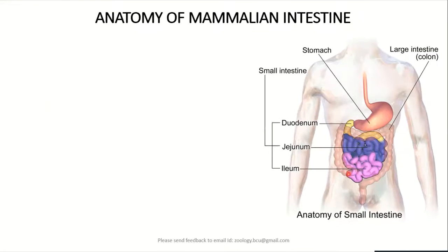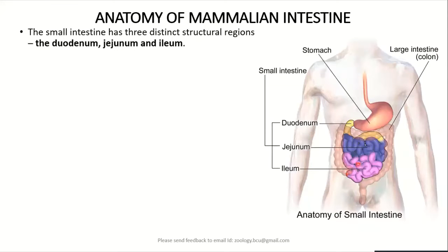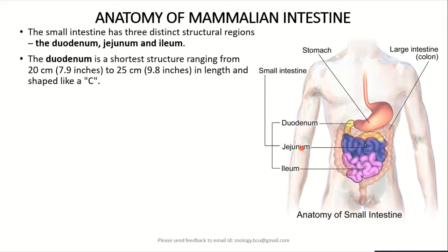The small intestine consists of three important parts: duodenum, jejunum, and ileum. The duodenum is the first and shortest part of the small intestine, ranging from 20 to 25 centimeters in length, and has a characteristic folded C-shaped structure.